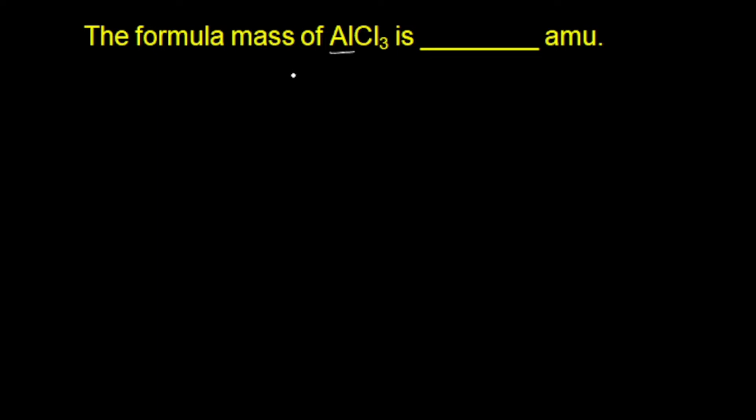At first we should look at the elements present in the compound and write their atomic masses. So at first we are writing atomic mass of aluminium and chlorine. The atomic mass of aluminium is equal to 27 amu.